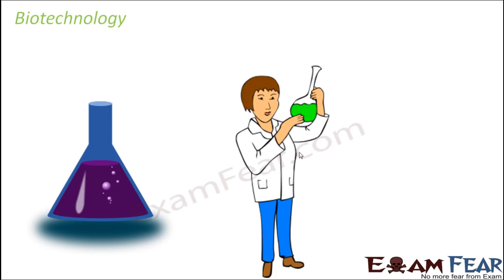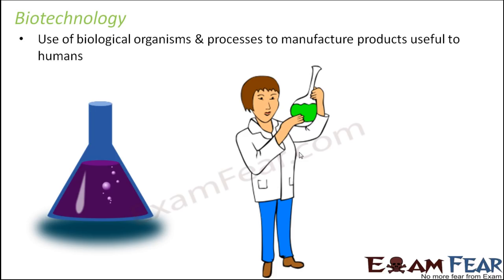With this brief introduction, let us try to define biotechnology. It is nothing but the use of biological organisms and processes to manufacture products which are useful to humans. Human beings will always do things thinking of their own benefit, so they manufacture products with the help of living organisms. What kind of products do we manufacture from living organisms? Can you think of an example?